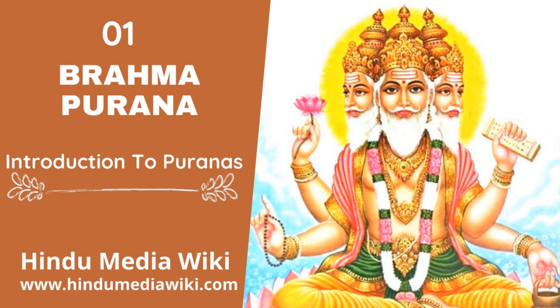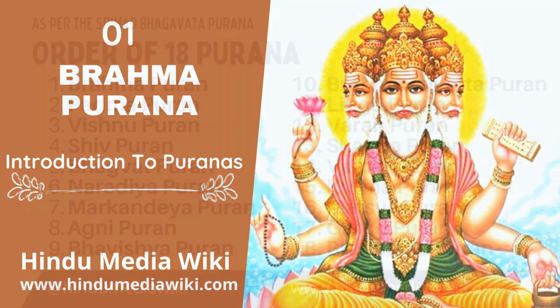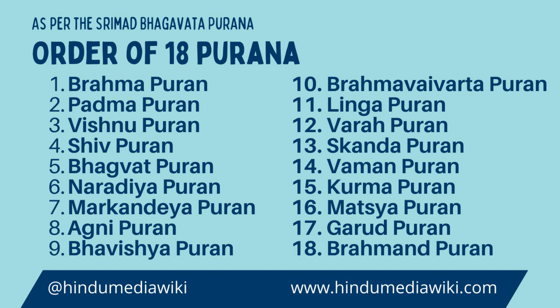The entire corpus of 18 Puranas is approximately 4 lakh shlokas. It requires lots of time to read them all, but we would like you to read them one by one, and to motivate you for it, we are going to give you a brief introduction one by one in this series. Srimad Bhagavad Puran lists the sequential order of Puranas. The order of appearance of different Puranas is also given in the Matsya Puran, chapter 53, as narrated by Sutta.